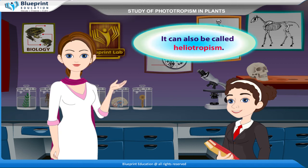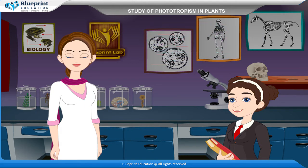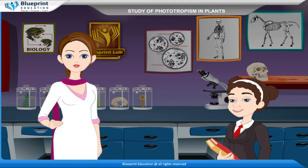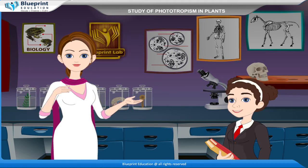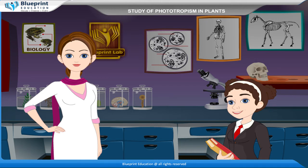Phototropism can also be called heliotropism. Some organs are attracted by unilateral light and grow towards it — they are said to be positively phototropic, for example the shoot. Others grow away from it and are said to be negatively phototropic, for example the root.